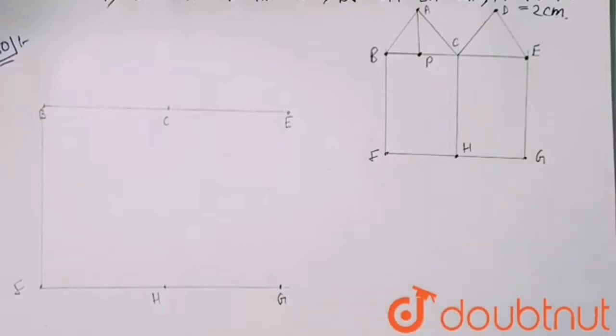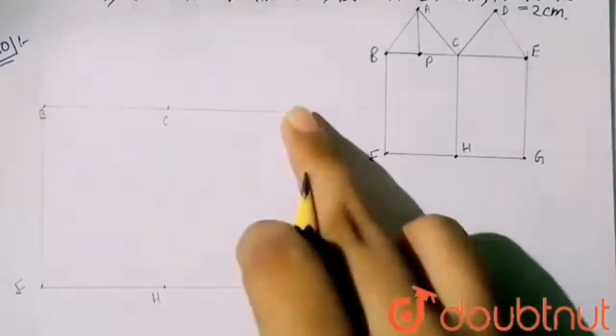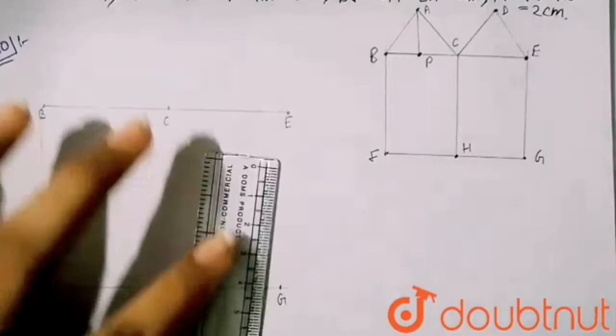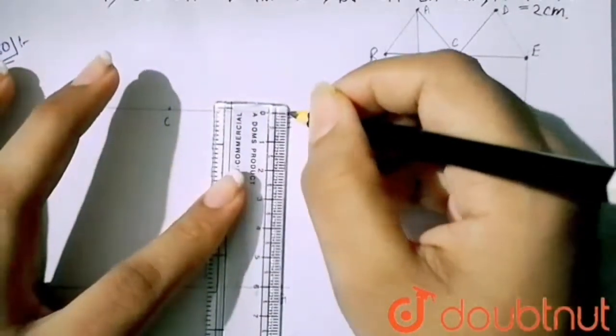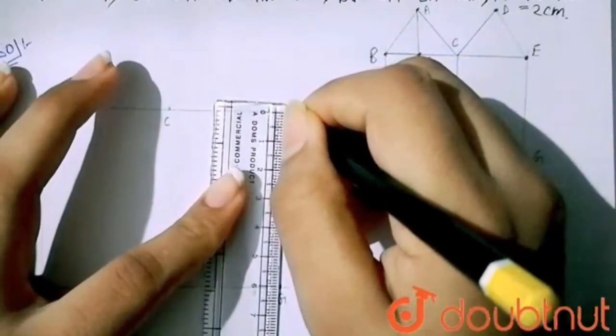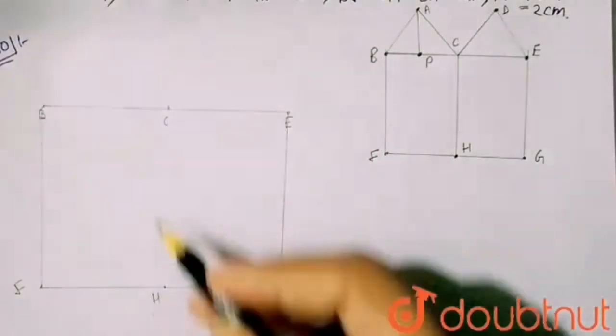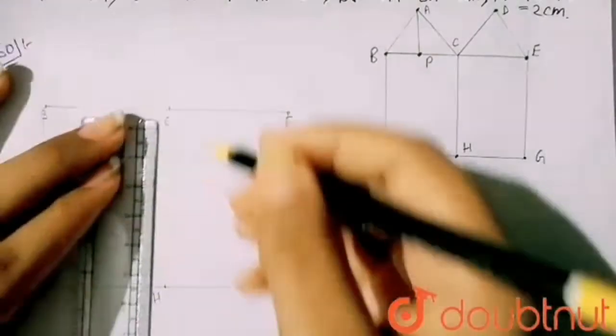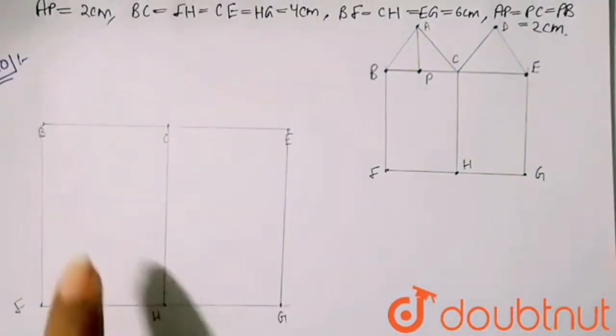Now my EG - EG is given 6 cm, so it will be directly joined with this. Now here my CH is also done. You can see we have drawn this dimension.